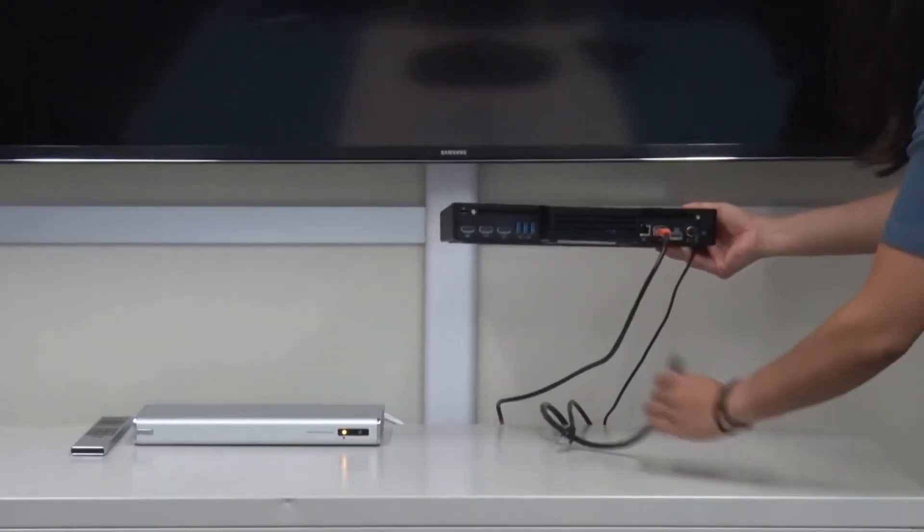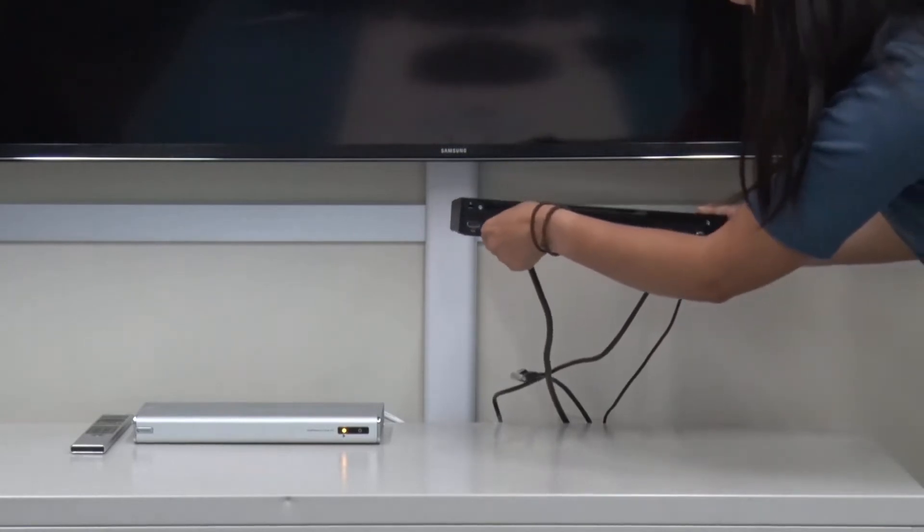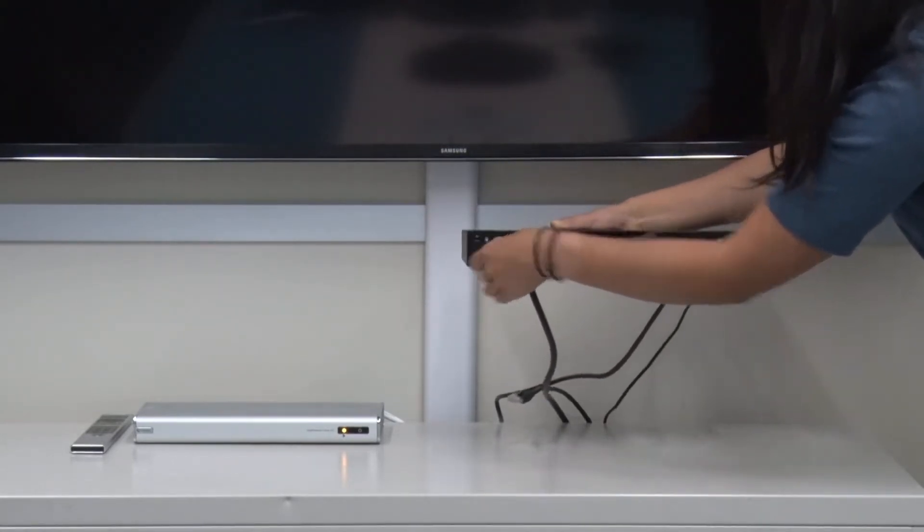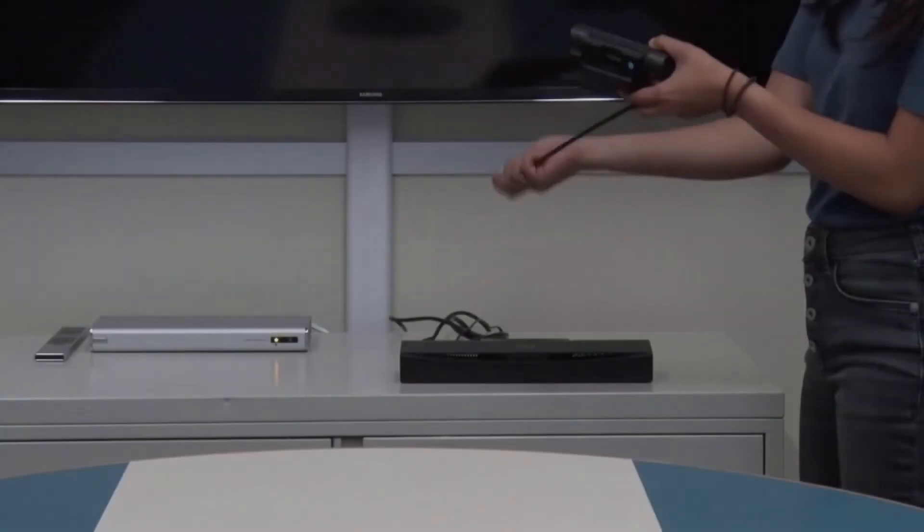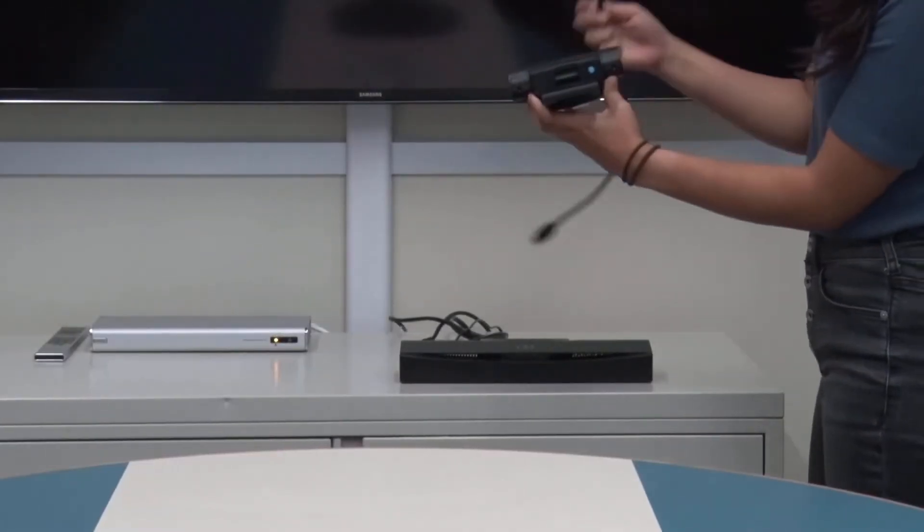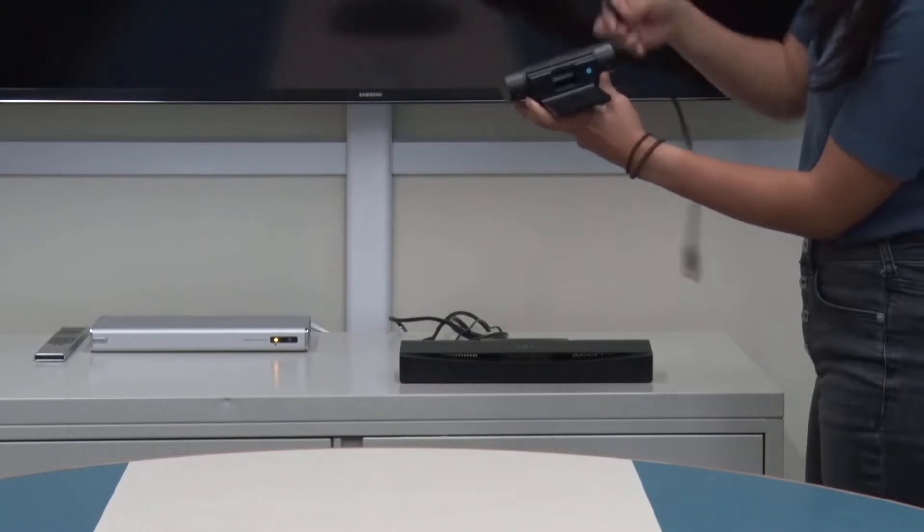Now we're going to connect the hub to the HDMI cord on the display. We're going to move to the camera by connecting the USB cable from the camera to the back of the Dolby voice hub.